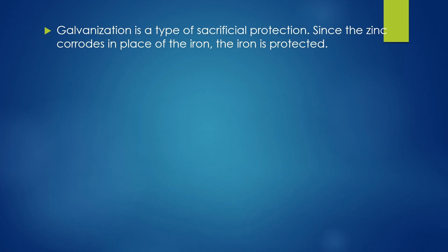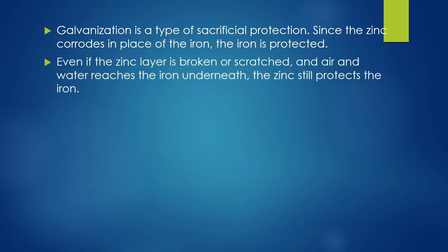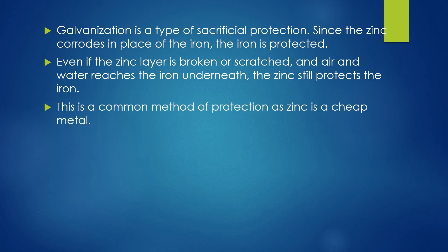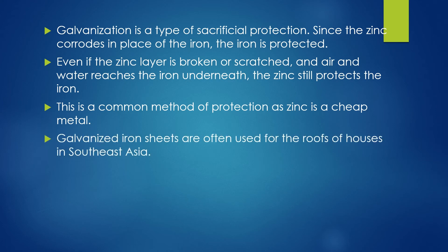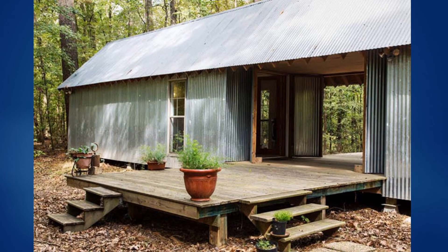Carbonization is a type of sacrificial protection, since the zinc corrodes in place of iron and the iron is protected. Even if the zinc layer is broken or scratched and air and water reach the iron underneath, the zinc still protects the iron — just like the zinc blocks. This is a common method of protection as zinc is very cheap. Carbonized iron sheets are often used for the roofs of houses in Southeast Asia, which are entirely covered by zinc sheets.